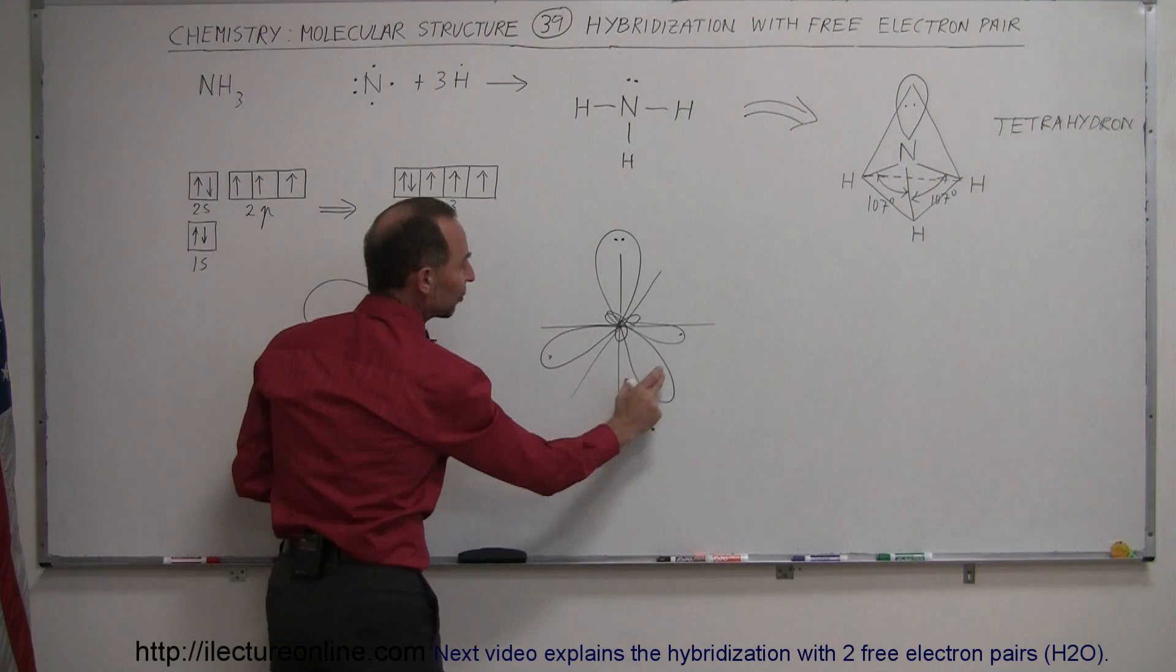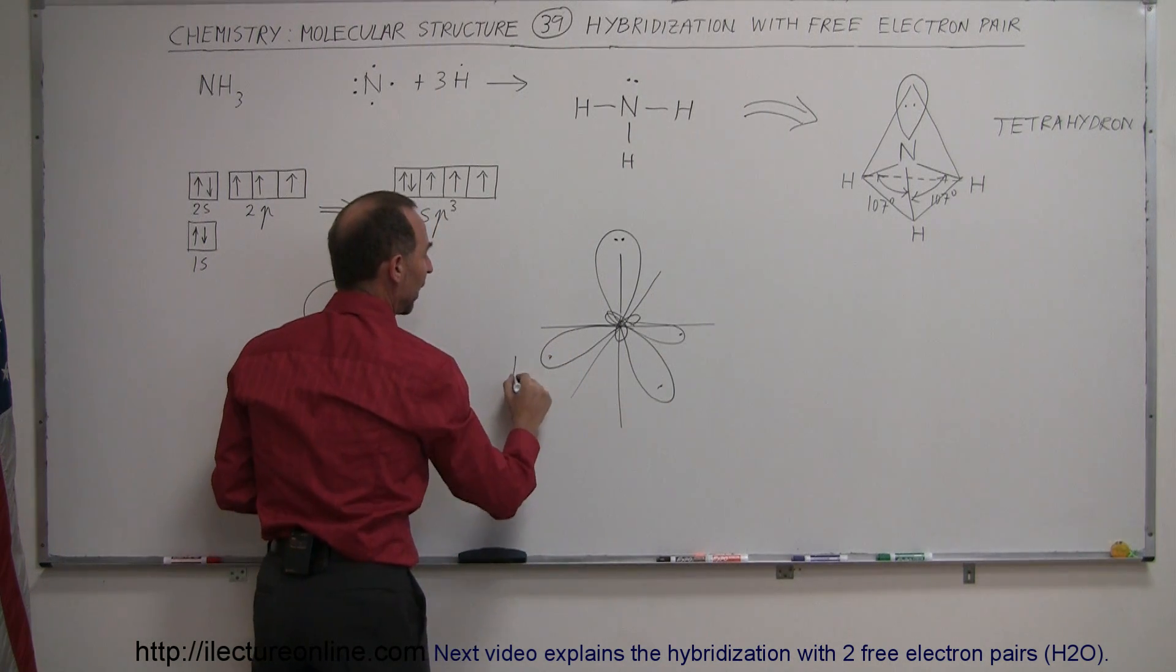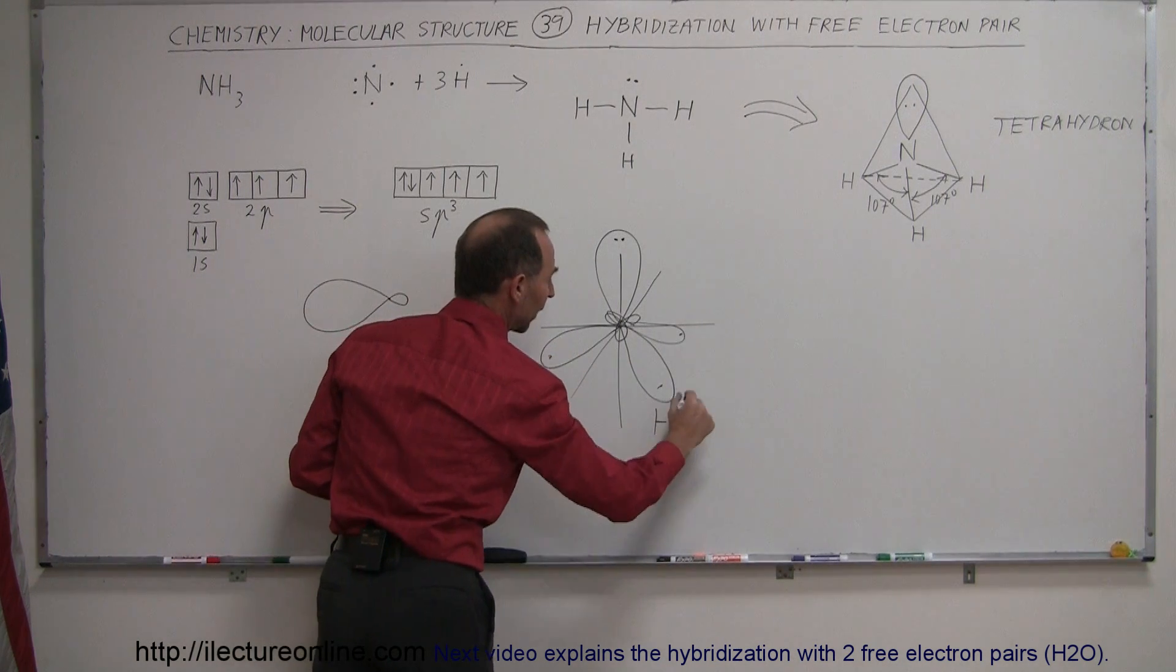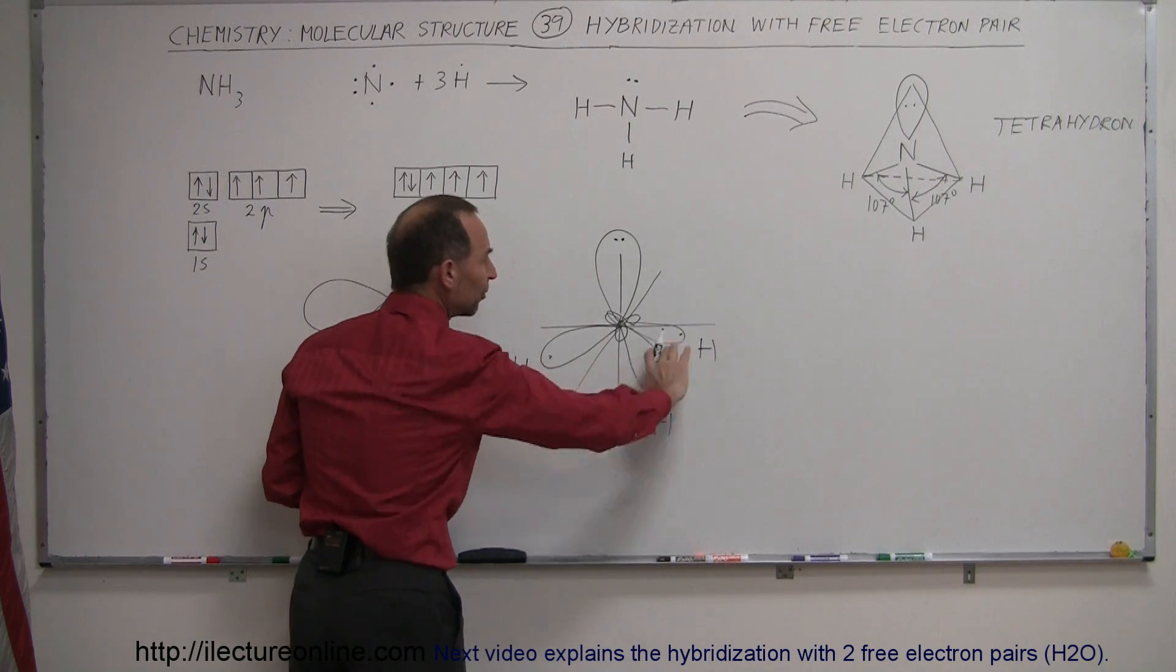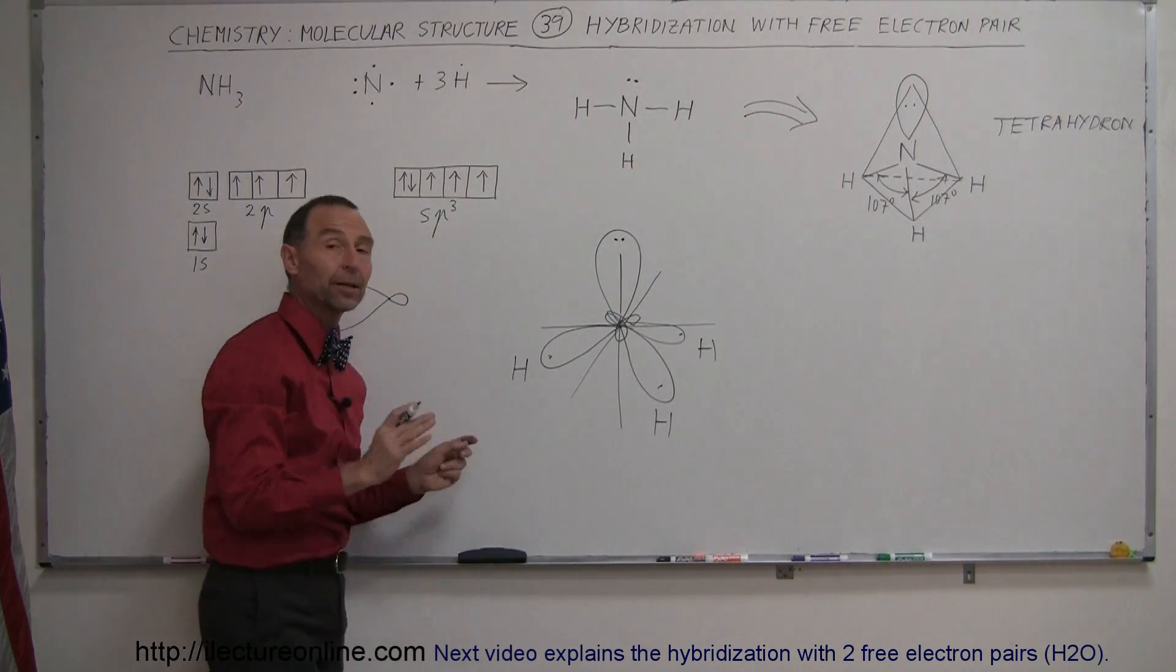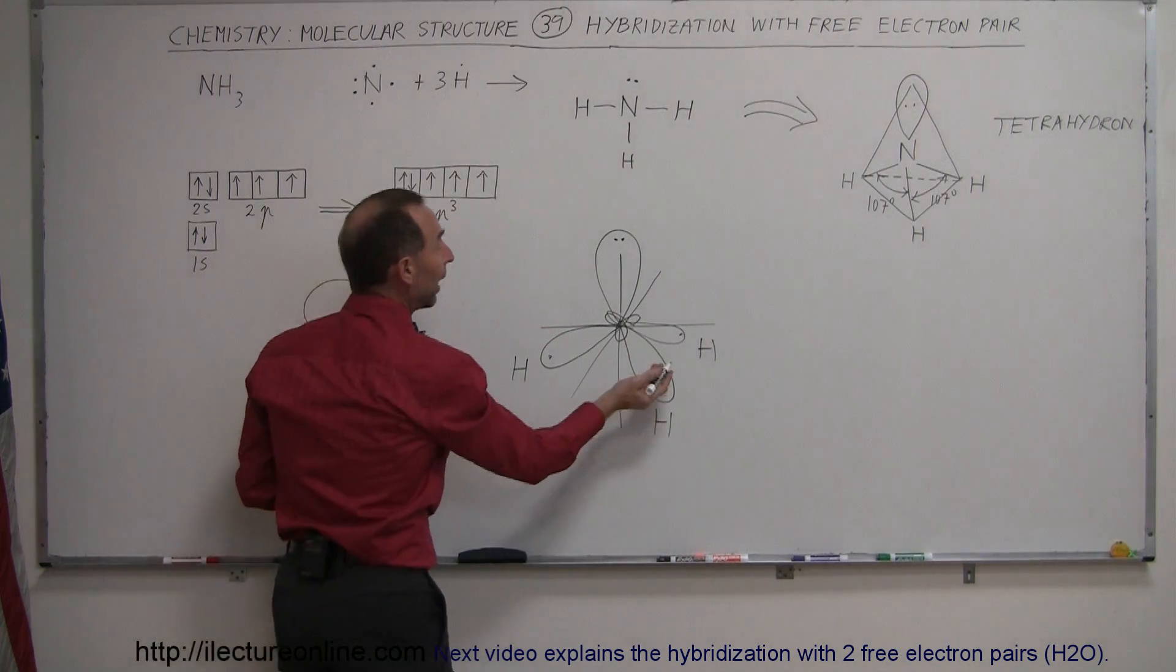So now notice that these three hybridized orbitals now have a place for hydrogen to anchor onto in a nice arrangement in such a way that they all have the exact same angle between them of 170 degrees.